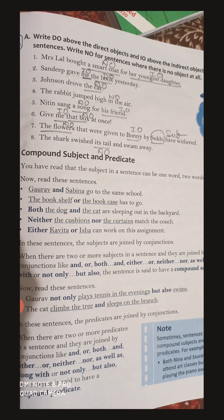So 'by Sukhi' — Sukhi is the subject here. Now what did Sukhi give? The direct object is the flowers. And who did Sukhi give them to? To Bonnie — so Bonnie is the indirect object. Hope you guys have understood this.